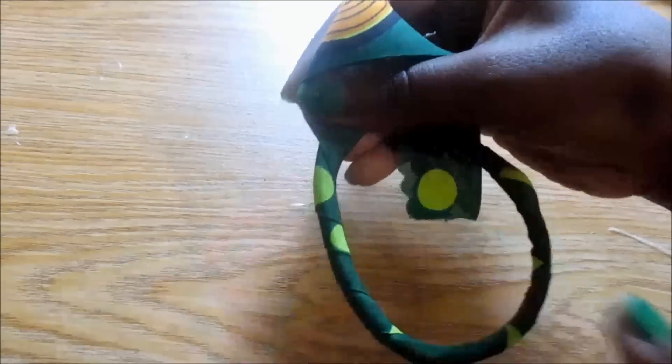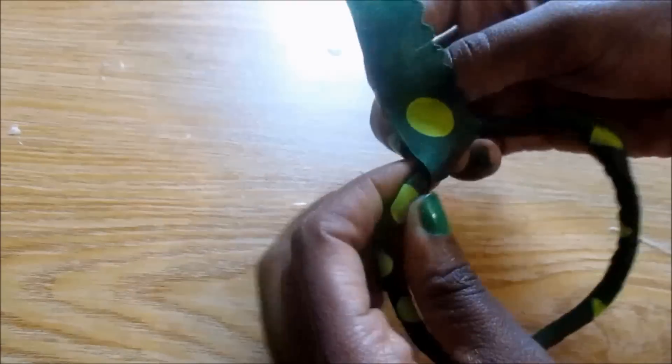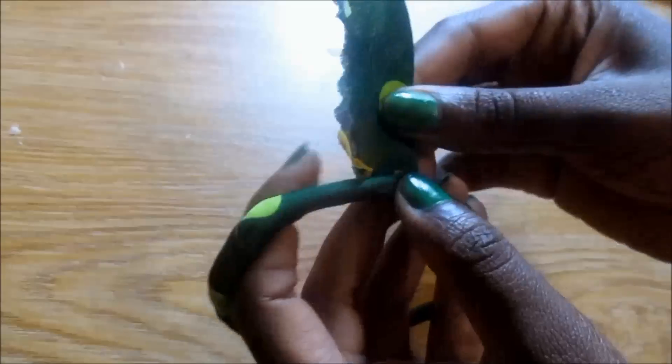When the rope bangle was all covered up, then I just cut off the excess fabric and just glue it in place.